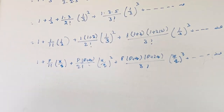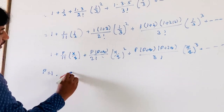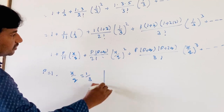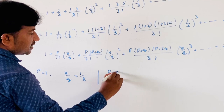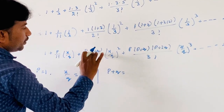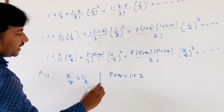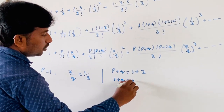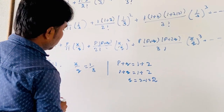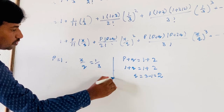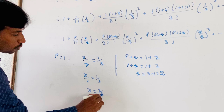By comparing both, p = 1 and x/q = 1/3. Since p + q = 1 + 2, and p = 1, we get q = 3 − 1 = 2. Then x/q = 1/3 gives x/2 = 1/3, so x = 2/3.